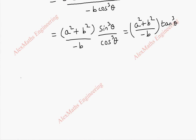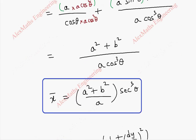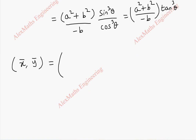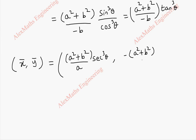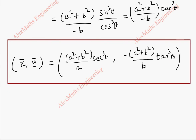Now we combine both x̄ and ȳ. The center of curvature (x̄, ȳ) is: x̄ = (a² + b²)/a · sec³θ, and ȳ = −(a² + b²)/b · tan³θ. So this is our required center of curvature.